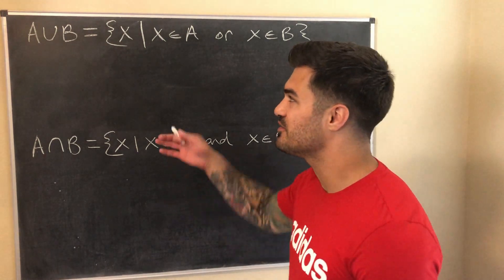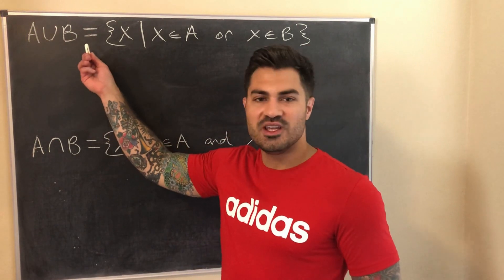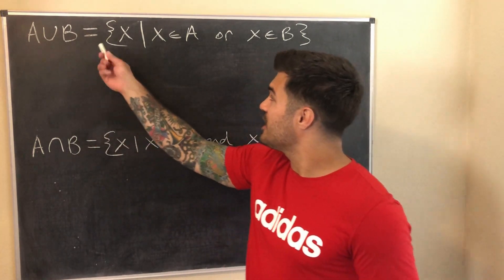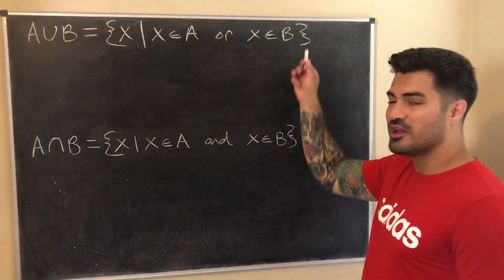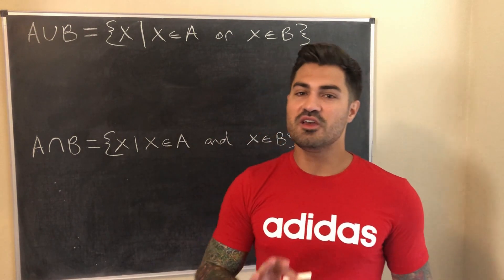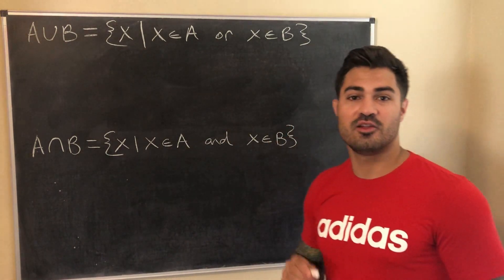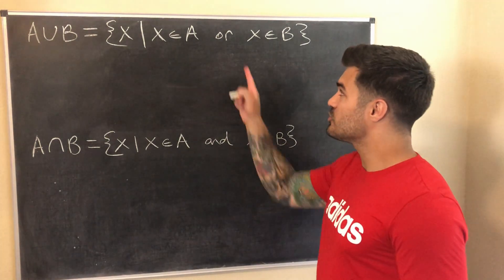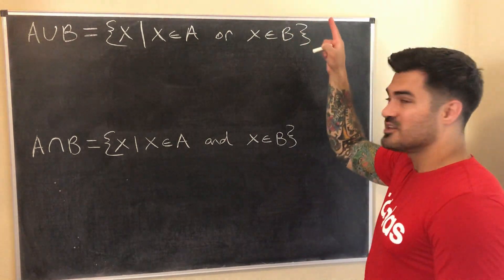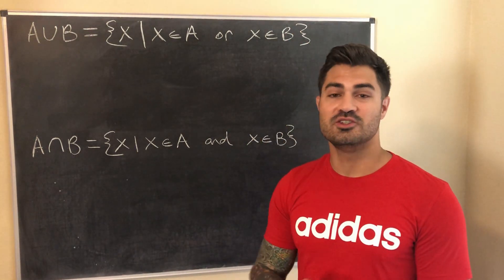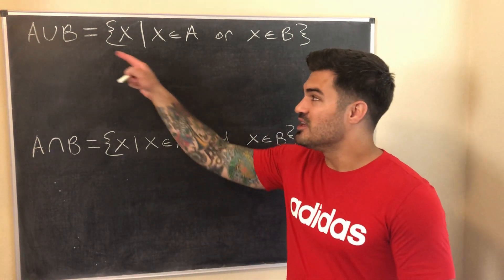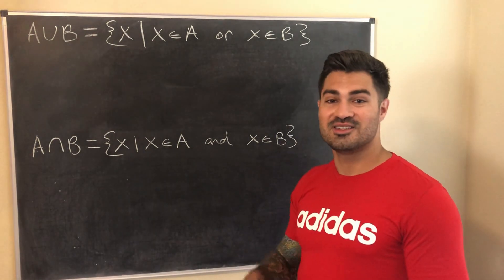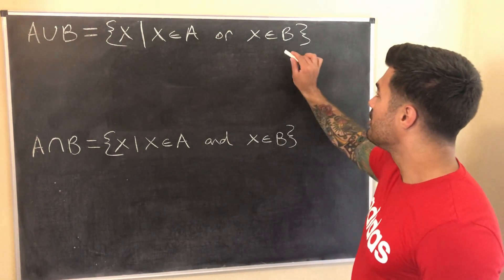Let's start with the definitions of union and intersection. Keep in mind that A and B are just arbitrary sets — these definitions work for any two sets. A union B is the set of all elements that are in A or in B. X is an element of A union B if and only if X is an element of A or X is an element of B. The biggest mistake students make is interpreting this 'or' as an exclusive either-or. In math we use an inclusive or, so we include elements that are in A, in B, or in both.